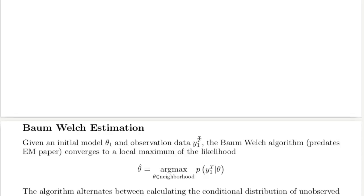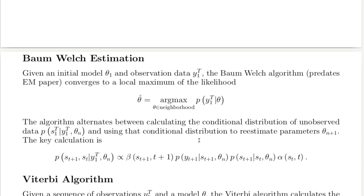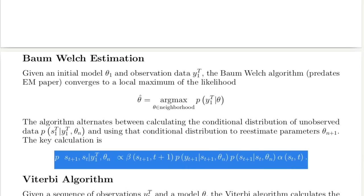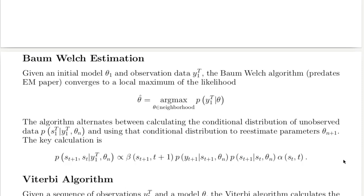The Baum-Welch algorithm incorporates the forward algorithm and the backward algorithm to get a maximum likelihood estimate of the model parameters given a sample of observed data. Sometimes it's called the forward-backward algorithm. As a special case of the EM algorithm, it was developed at the Institute for Defense Analysis Communication Research Division in Princeton, New Jersey, before Dempster and company published their paper on EM. The algorithm alternates between calculating the conditional distribution of the unobserved states and using that conditional distribution to re-estimate the model parameters. The key calculation gives the conditional probability of each state transition at each time step given the observed data.